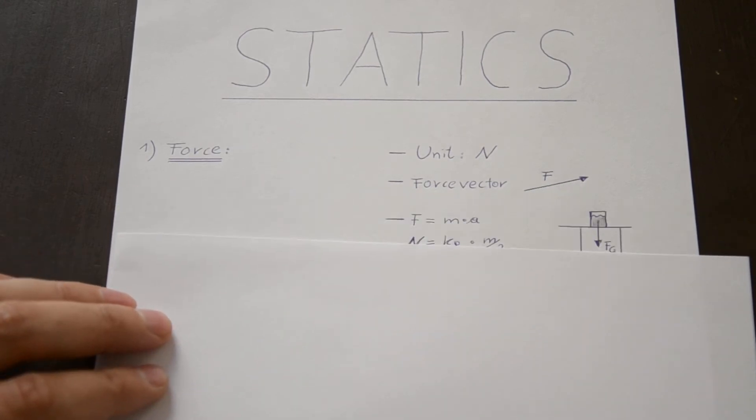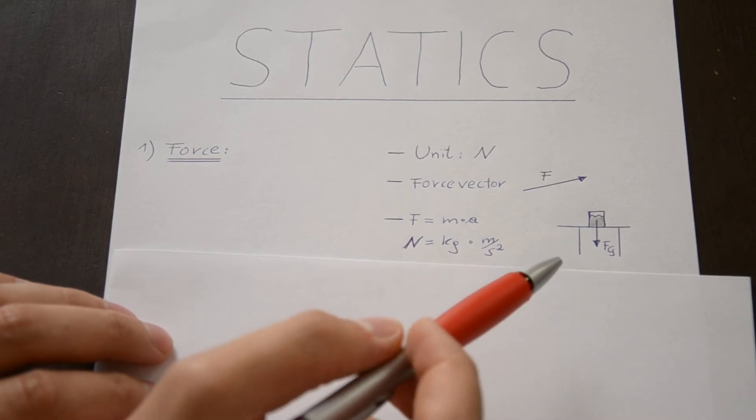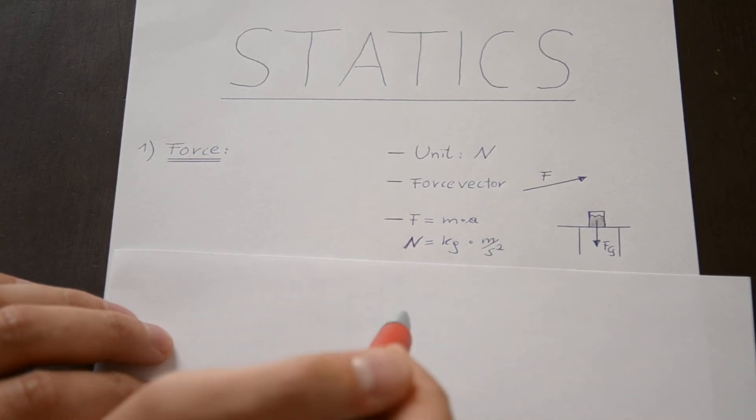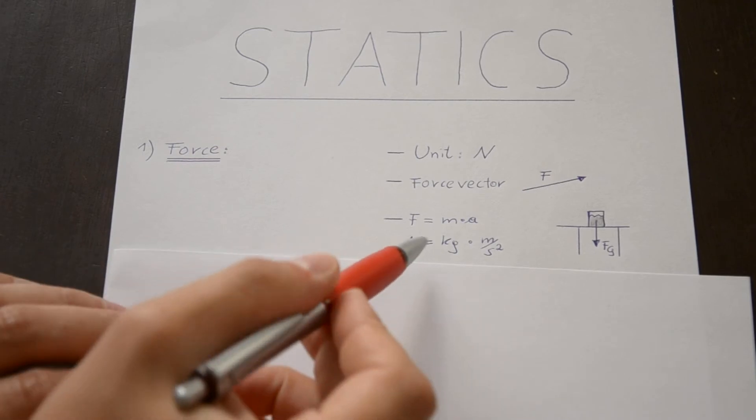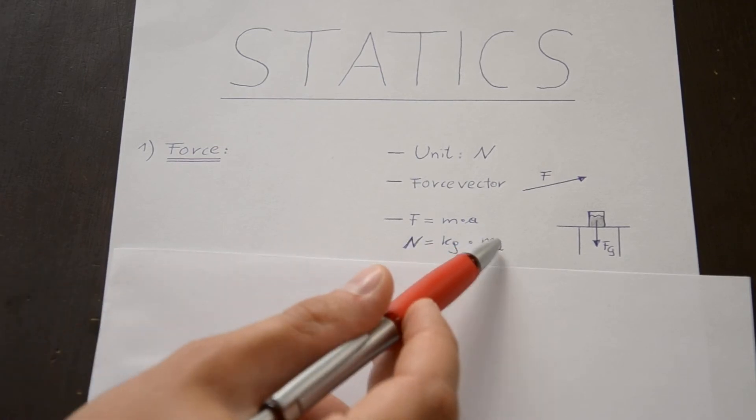The definition of the force is mass times acceleration, and this can easily be proved by a glass of water standing on the table. Here it is. So the glass of water has a mass, some number in kilograms. The acceleration is the earth's gravity with the unit meter divided by square second. So according to the definition of the force, the unit Newton must be kilograms for the mass times meter divided by square second for the acceleration. And this is correct because Newton is exactly kilogram times meter divided by square second.